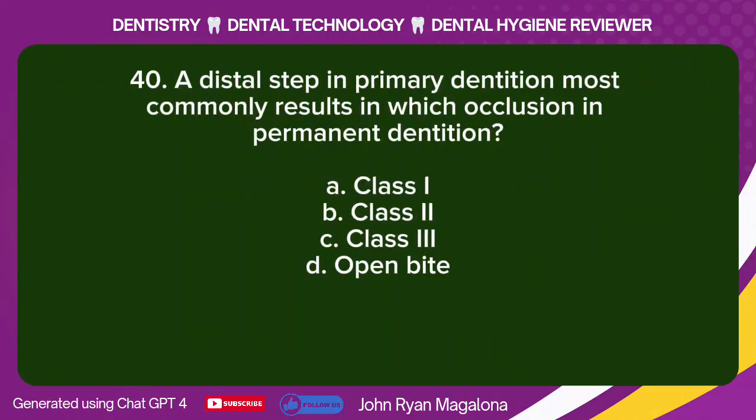Question 40: A distal step in primary dentition most commonly results in which occlusion in permanent dentition? A. Class 1. B. Class 2. C. Class 3. D. Open bite. Answer: B. Class 2.